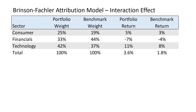The last thing is what we call the interaction effect. The intuition is: did we have good stock selection in the sectors that we overweighted, and bad stock selection in the sectors that we underweighted? We had good stock selection in consumers and we overweighted it — smart to over-allocate to a sector where we had good stock selection. We had bad stock selection in financials and we underweighted it — so we were smart enough to under-allocate where we had bad stock selection. And we had good stock selection in technology and overweighted there too. So all three should give us positive numbers.